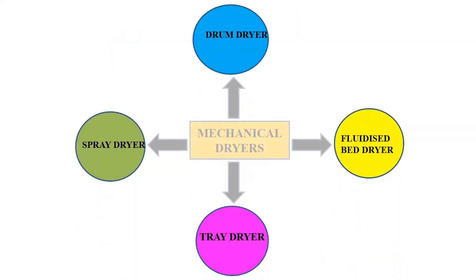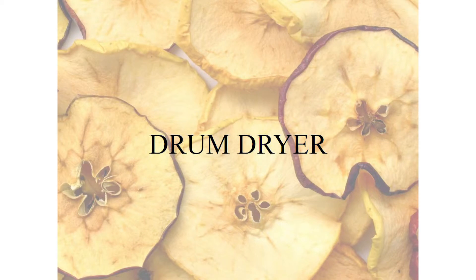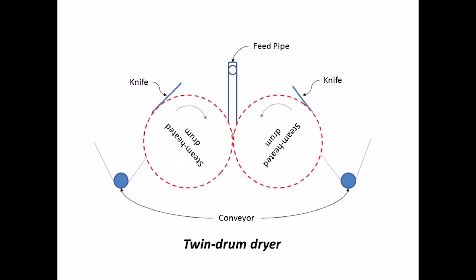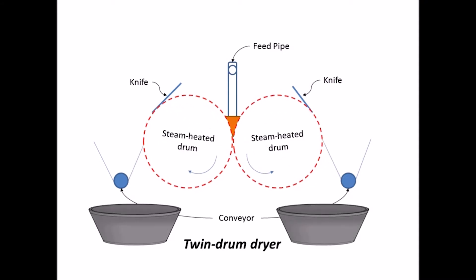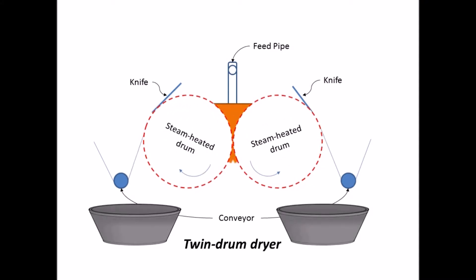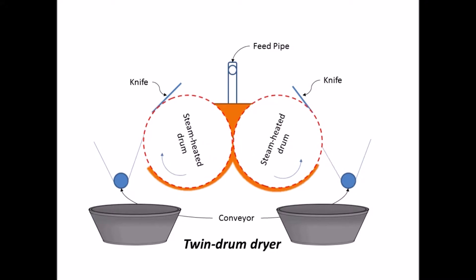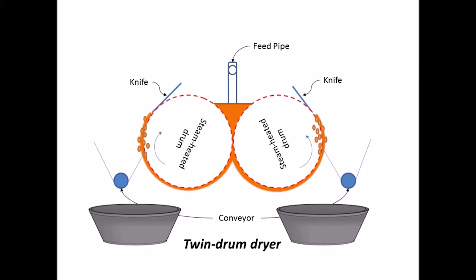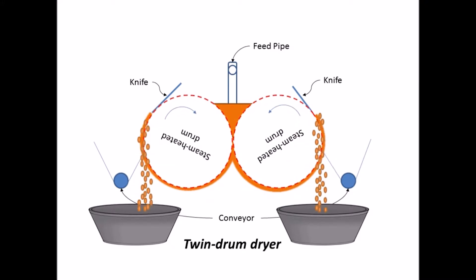Mechanical dryers are used for drying foods. The drum dryer consists of a drum that is heated internally, usually by steam, and is rotated about its longitudinal axis. The feed forms a thin layer over the drum, and the drying takes place by conduction.